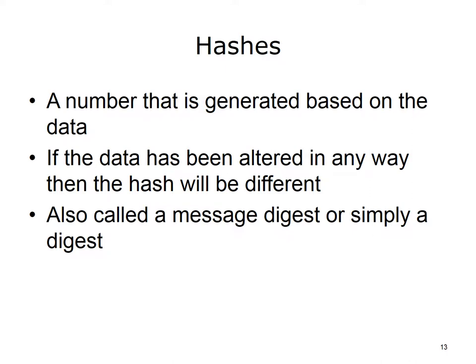A hash or hash value is a number generated based on the data being sent. If there is any alteration to the data, the hash value will change. A sender runs a program to create a hash value, encrypts the hash value along with the data, and sends it to the receiver. The receiver unencrypts the data and hash, creates a hash value for the received data, and should receive the same hash value as the sender. If not, the data has been altered in some way and its integrity has been compromised.